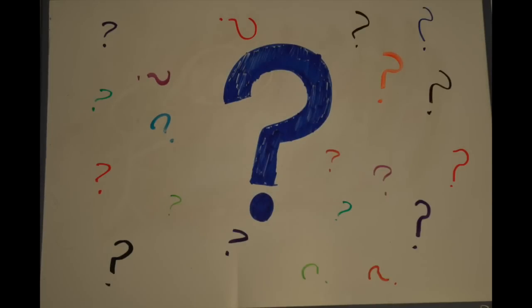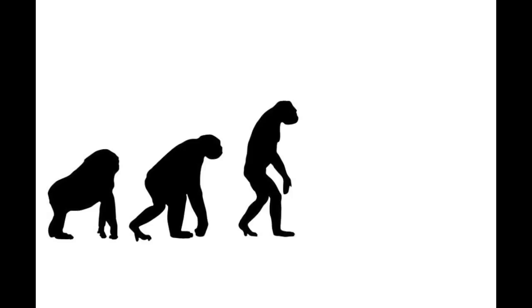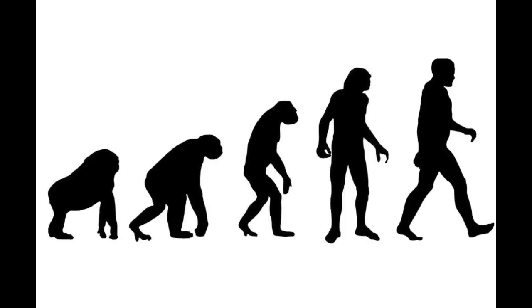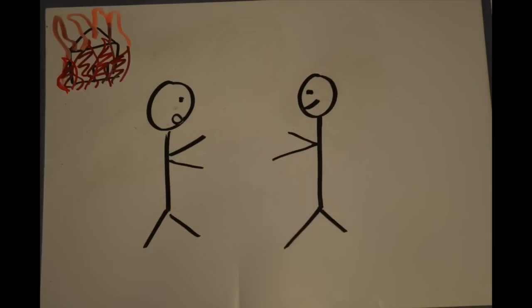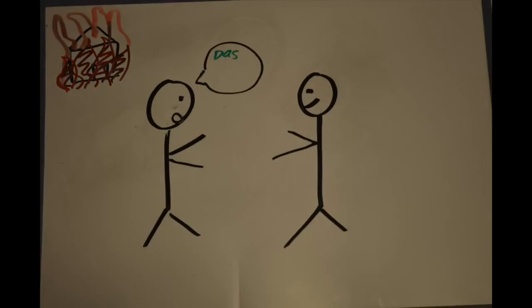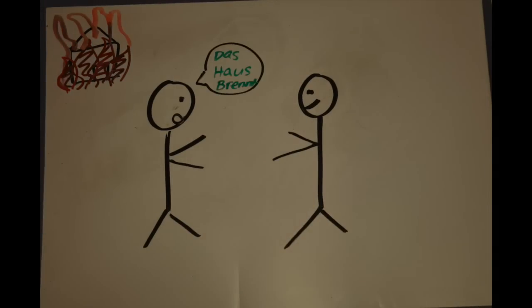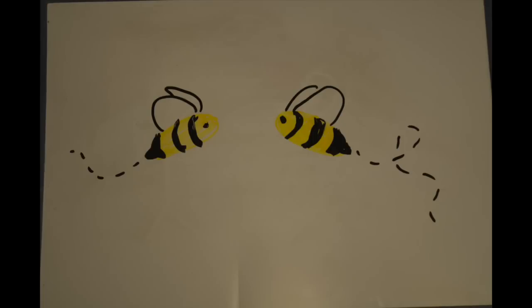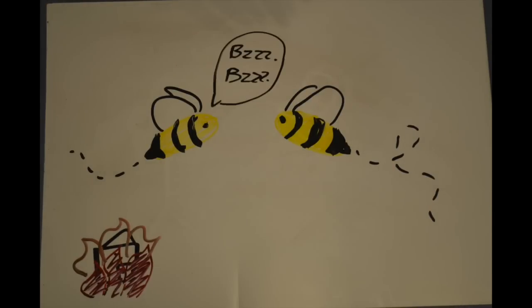First of all, we need to talk about one thing: what is language? Over time, humans have evolved into the innate faculty of language, meaning we have the ability to create language to use as our main method of communication. This is an exclusive human trait. Language allows us to communicate with one another everything that can be or needs to be said. All other animals, including bees, don't have this privilege.